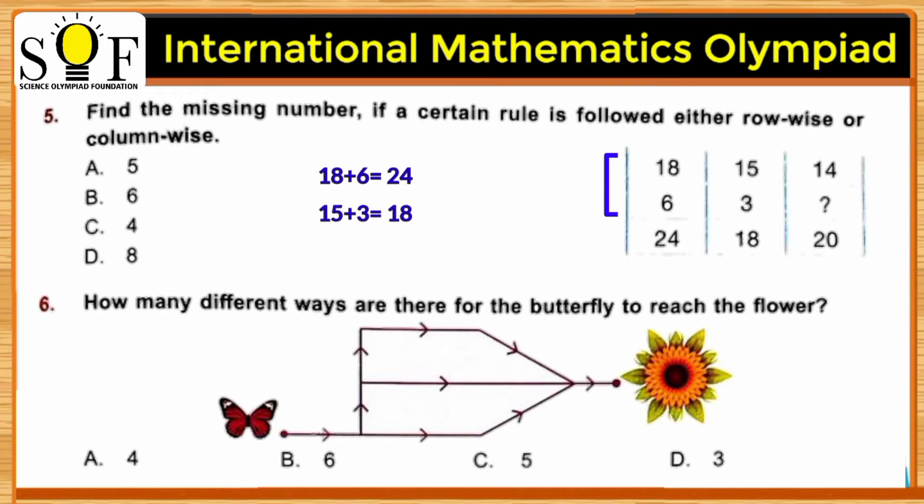Similarly, if we add 15 and 3, we get 18. So what will be added to 14 to get the number 20? The answer is number 6. If we add number 6 to number 14, we get number 20. So the answer is option B, number 6.